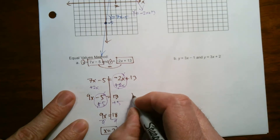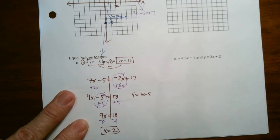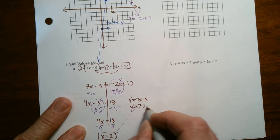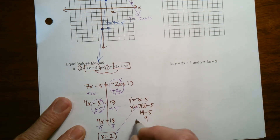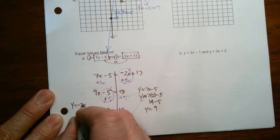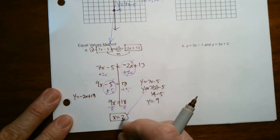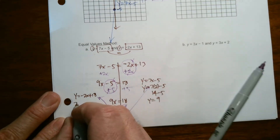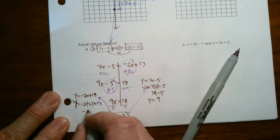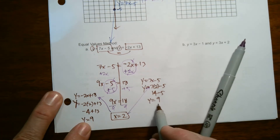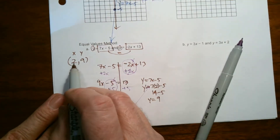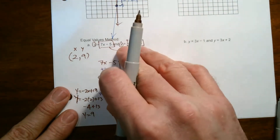To check the Y algebraically, I plug X equals 2 into both equations. For Y equals 7x minus 5: Y equals 7 times 2 minus 5, which is 14 minus 5, so Y equals 9. For Y equals negative 2x plus 13: Y equals negative 2 times 2 plus 13, which is negative 4 plus 13, so Y equals 9 again. I get Y equals 9 both times, confirming the answer is (2, 9) — that ordered pair works for both equations.